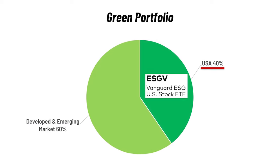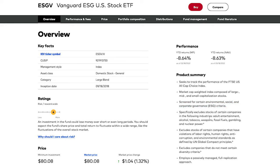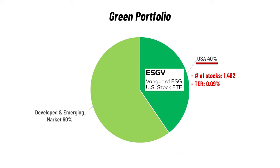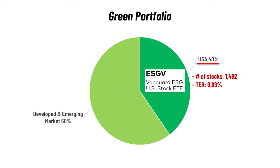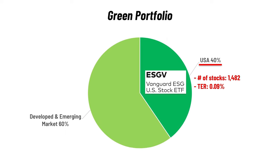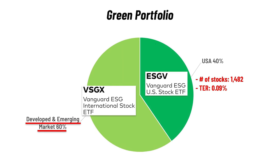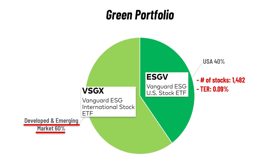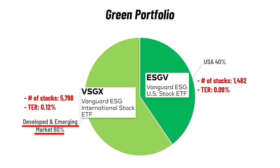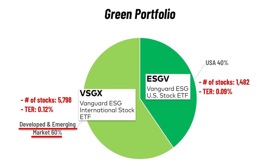For the ESG US ETF, you could go for Vanguard's ESG US Stock ETF, ticker symbol ESGV. It invests in over 1,400 US companies with above-average ESG ratings, excluding adult entertainment, alcohol, tobacco, weapons, fossil fuel, gambling, and nuclear power industries. Its expense ratio is 0.09%, one of the cheapest in the ESG space. For the international ESG ETF, Vanguard's ESG International Stock ETF, ticker symbol VSGX, invests in ESG-friendly companies in developed and emerging markets excluding the US — 5,700 companies from 51 countries — with an expense ratio of 0.12%.